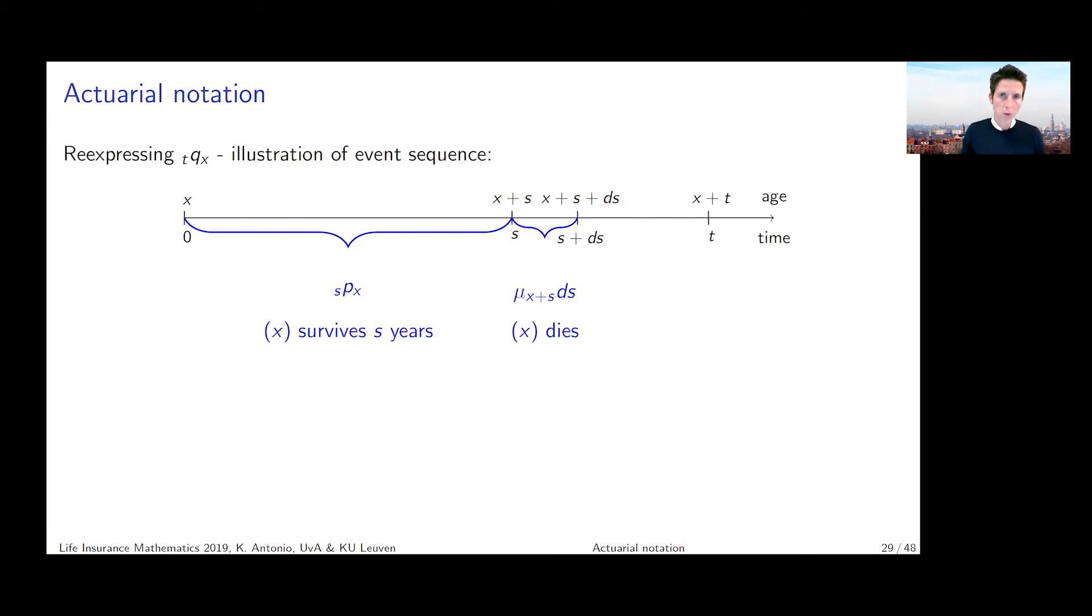And the way how this timeline pictures this probability of dying is by saying, well, let's look at the whole interval from x to x plus t or equivalent time, time interval from zero to t, right?